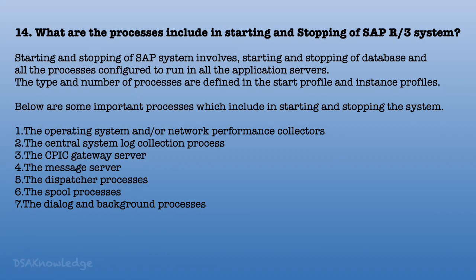What processes are involved in starting and stopping the SAP R/3 system? Starting and stopping involves the database and all processes configured to run on all application servers. The type and number of processes are defined in the start profile and instance profiles. Key processes include: the OS and network performance collectors, the central system log collection process, the CPIC gateway server, the message server, the dispatcher processes, the spool processes, and the dialog and background processes.